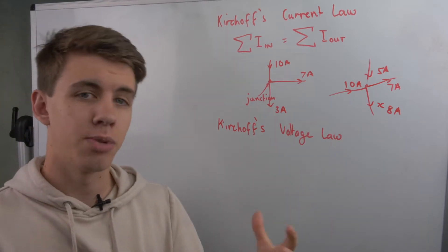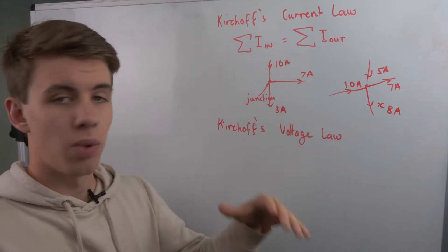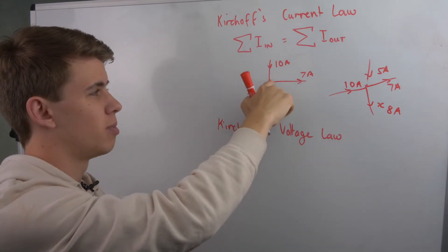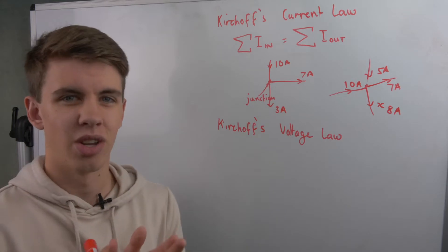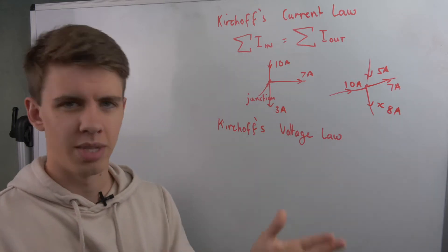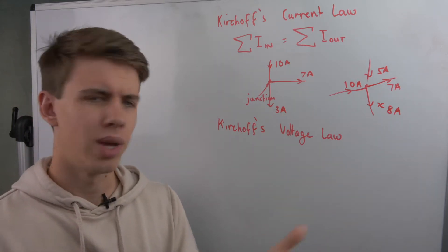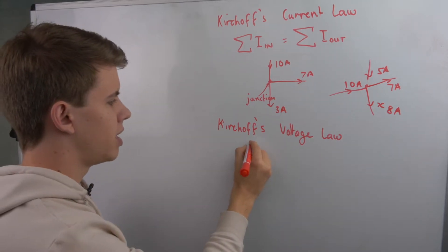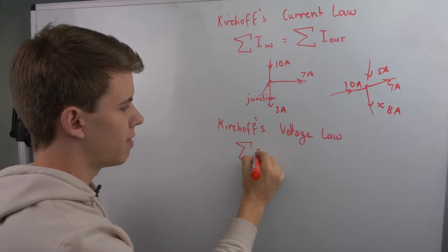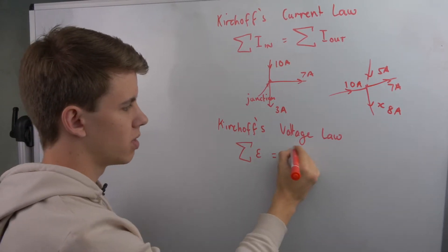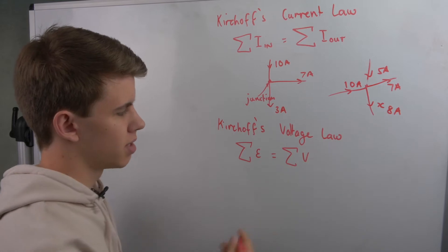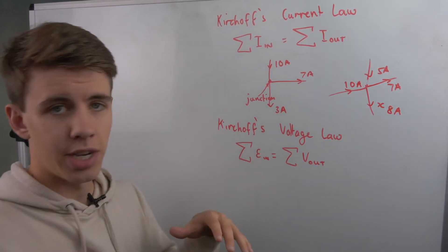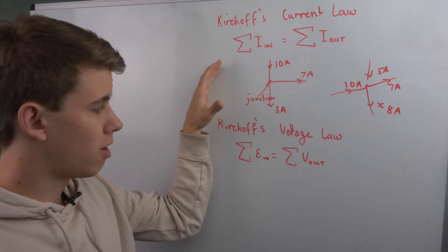It helps us explain how current will be the same everywhere in a series circuit, but when it's in a parallel circuit it will split. Current can only travel in one direction; it can't be simultaneously traveling down two different wires. Kirchhoff's voltage law says that the sum of all the EMFs going into any loop is equal to the sum of potential difference coming out of that loop. This is a conservation of energy, whereas current law is a conservation of charge.